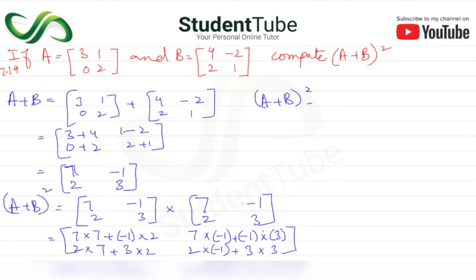So we get (A+B)² is equal to: 7 sevens are 49, plus minus 2 gives us...